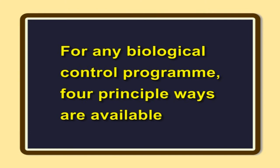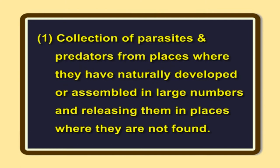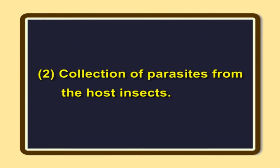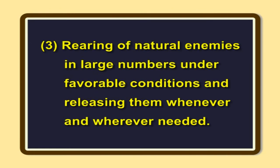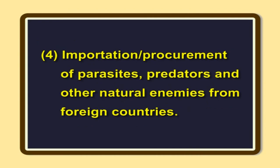For any biological control program, four principal ways are available. Number one: collection of parasites and predators from places where they have naturally developed or assembled in large numbers and releasing them in places where they are not found. Number two: collection of parasites from the host insects. Number three: rearing of natural enemies in large numbers under favorable conditions and releasing them whenever and wherever needed. Number four: importation or procurement of parasites, predators, and other natural enemies from foreign countries.